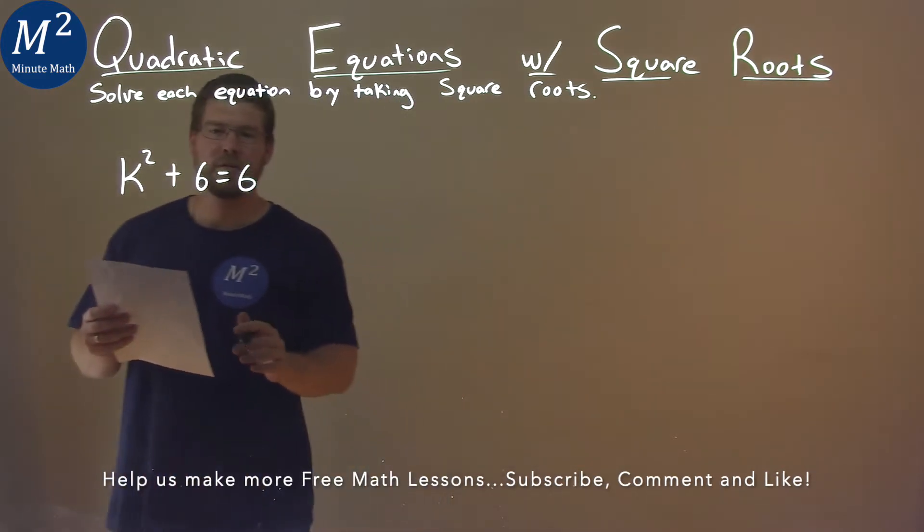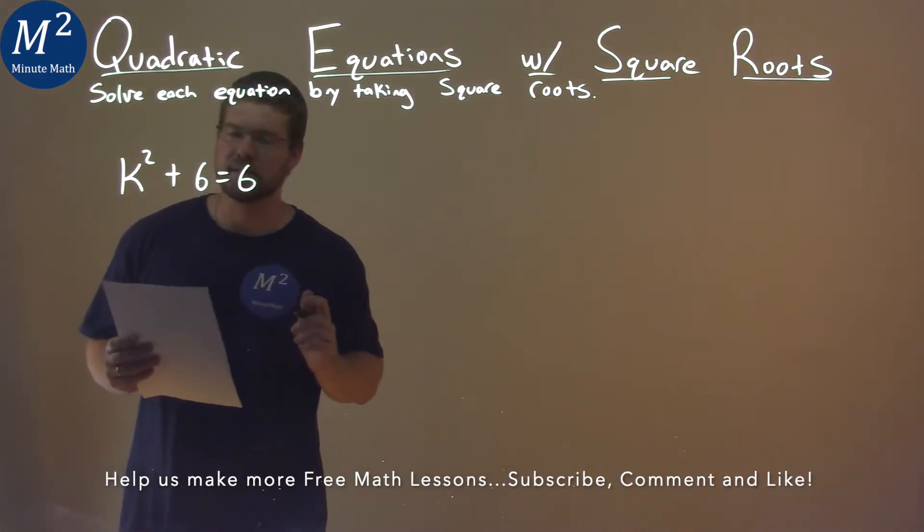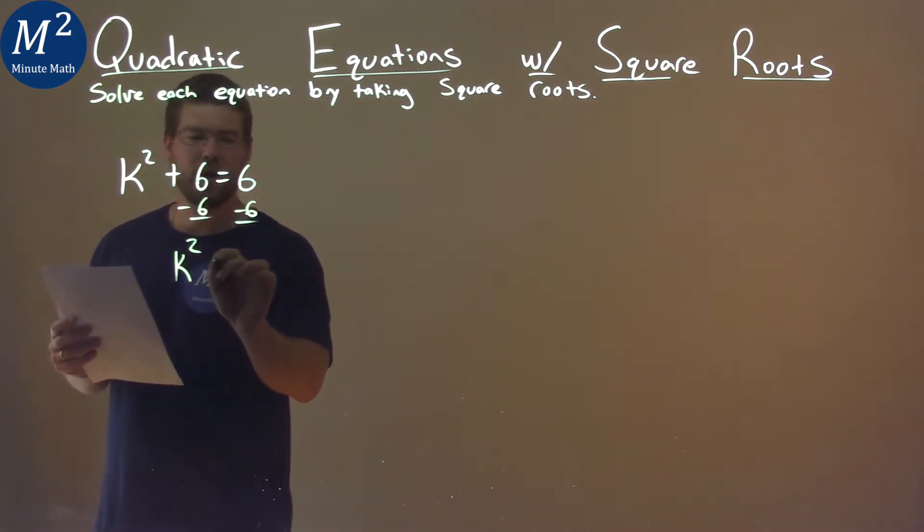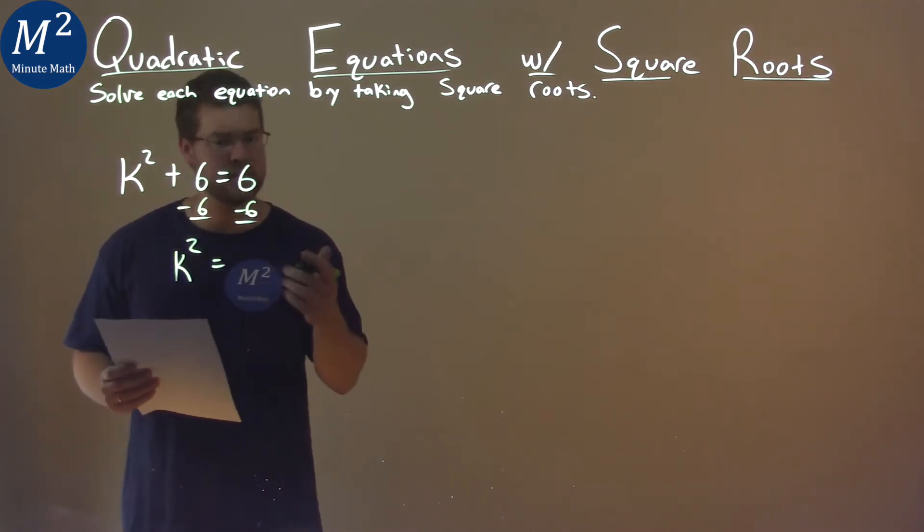Well first thing I want to do is, I'm going to try to get k squared by itself. So I'm going to subtract the 6 from both sides, and we're left with k squared equals 6 minus 6 is 0.